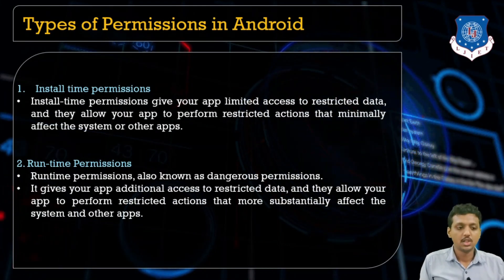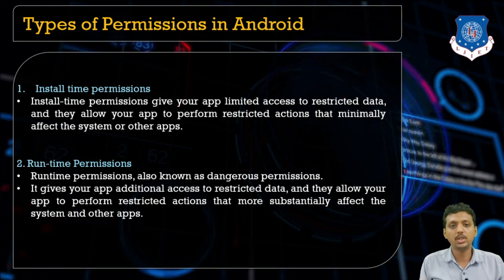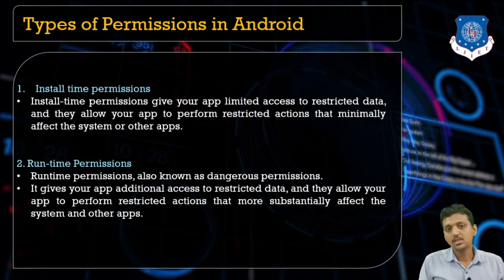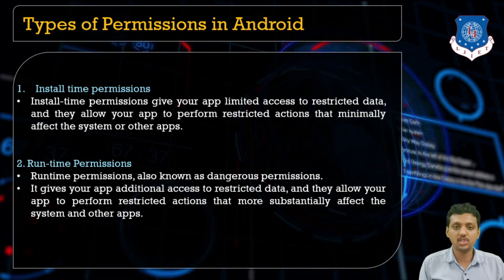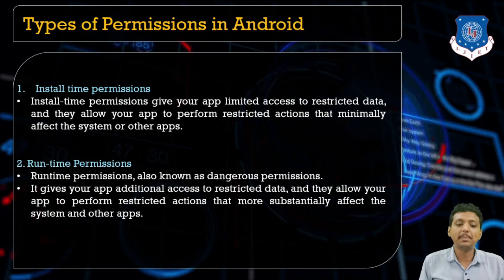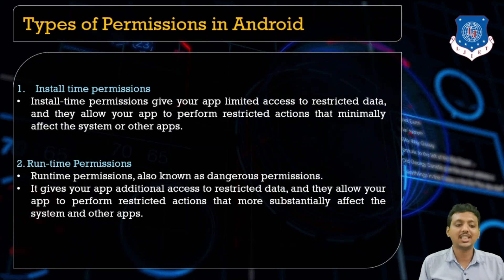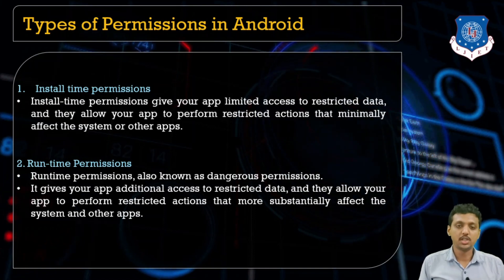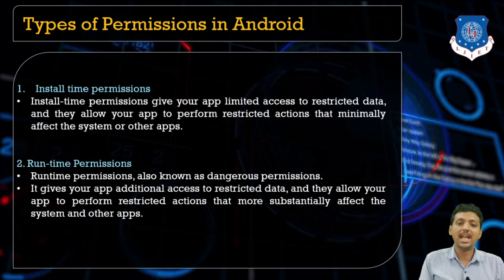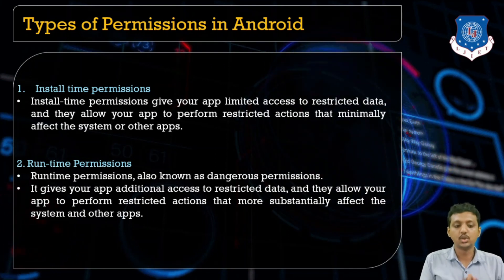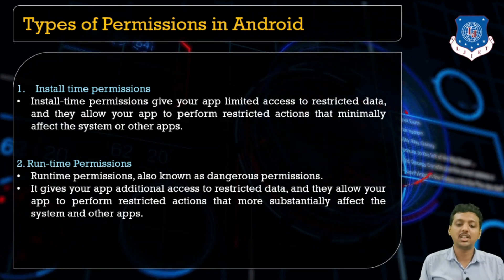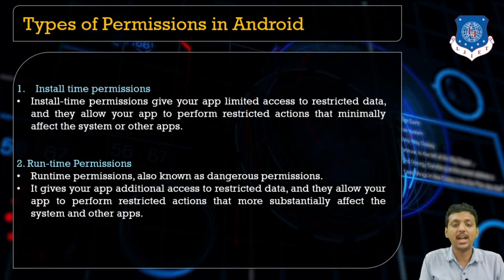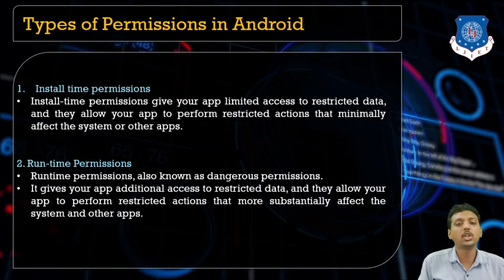There are two types of permissions. The first is install-time permission, which gives your app limited access to restricted data and allows it to perform restricted actions that minimally affect user privacy. The second is runtime permission, also known as dangerous permission, which gives your application access to restricted data and allows it to perform restricted actions that may affect one or more applications on the device.